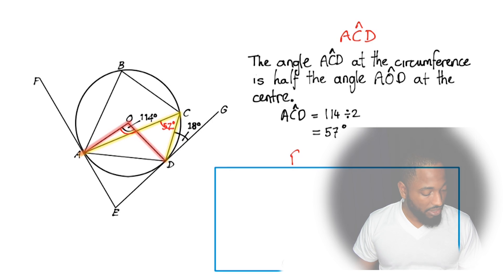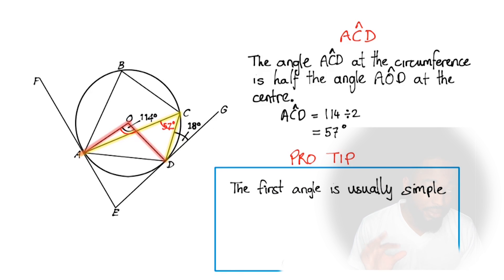Here's a pro tip. The first angle is usually simple. So the first angle to find is usually simple. So you should be on the lookout for the simpler terms involving patterns like angle at the circumference, angle in a semicircle, that kind of thing. Let's move on.